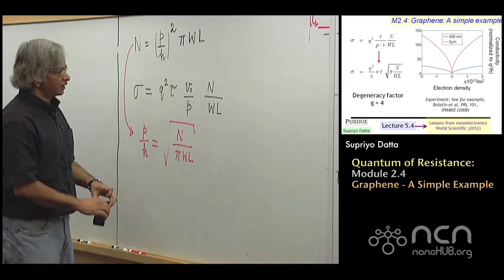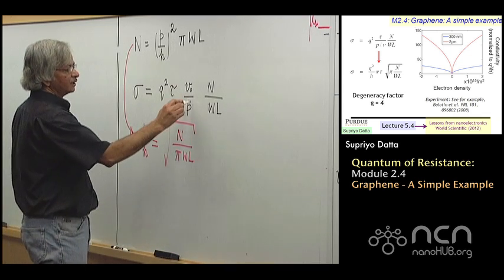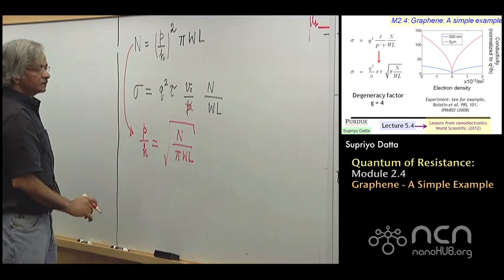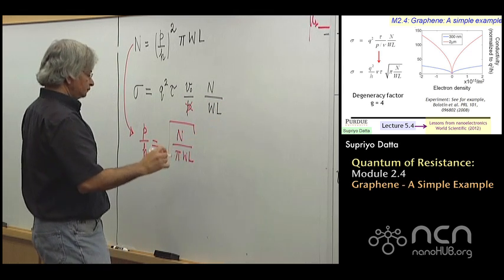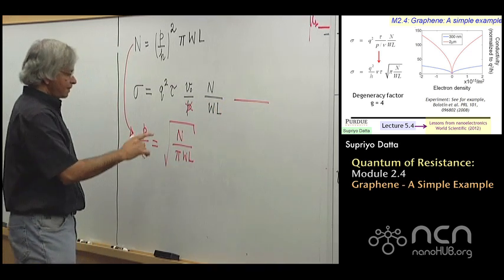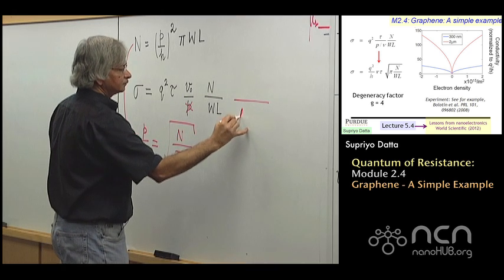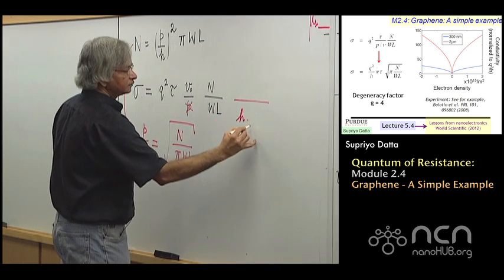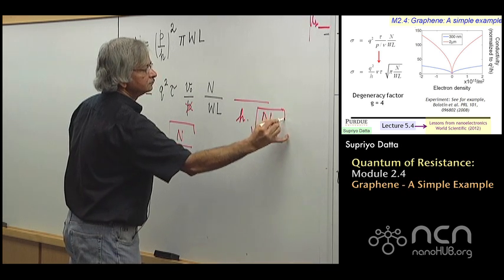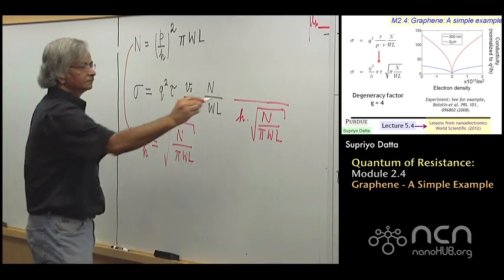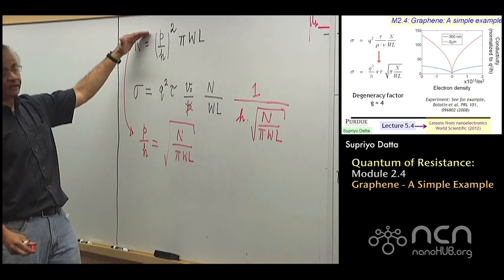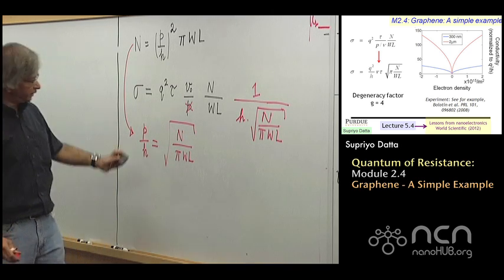So that way, we can eliminate the P from here, and we'd have an expression for conductivity in terms of N alone. And so, the way that would go then is, from here, I can write P over H is equal to N over Pi WL square root. So all I did is, P over H squared is N divided by Pi WL, and then I take square root on both sides. So that's it. So, instead of this P here then, I could take off the P from here, and instead replace it with what I have from here, right?